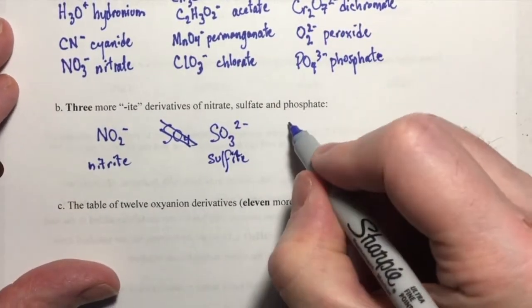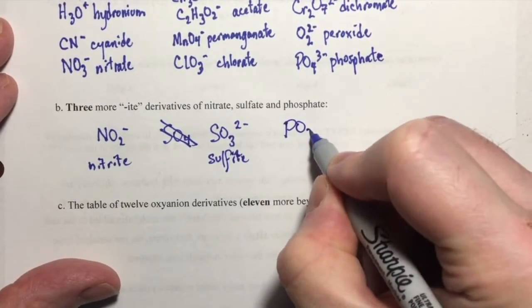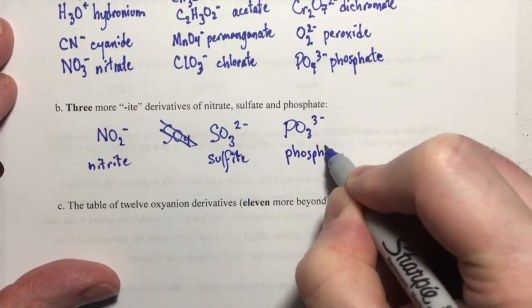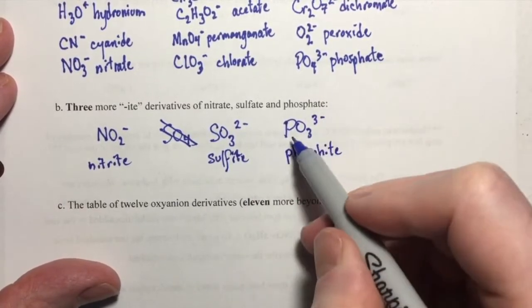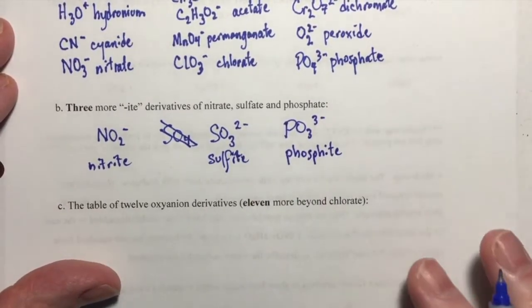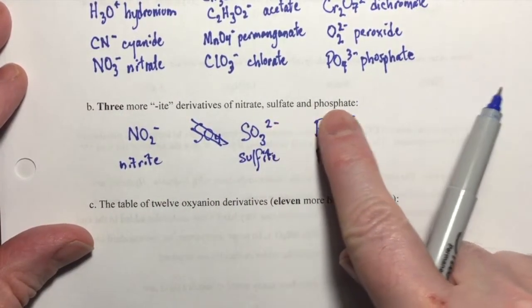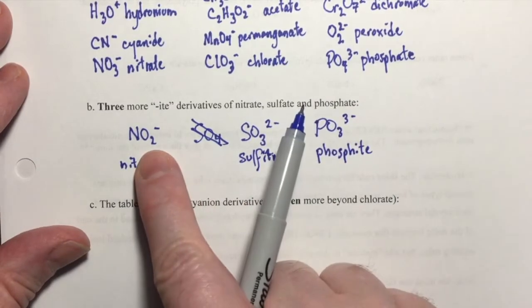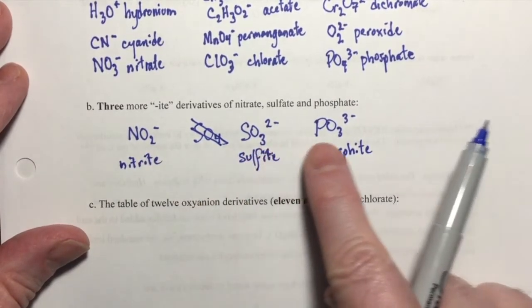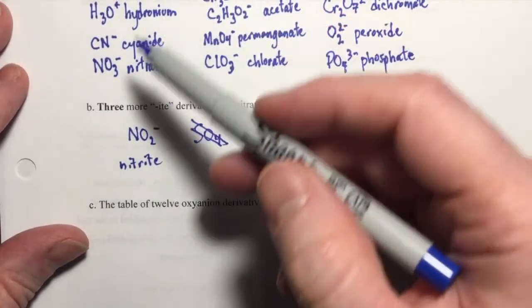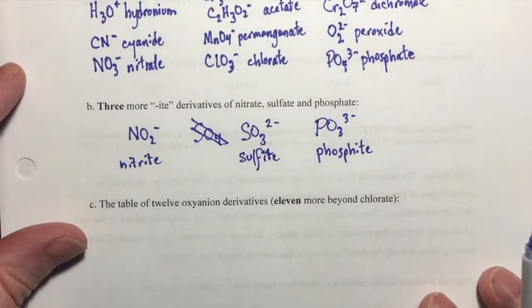And of course, phosphite, PO3 with a three minus charge. They're ite derivatives of nitrate, sulfate, and phosphate because they have one less oxygen than each of those ions. So that's 16 and 3 is 19 so far.